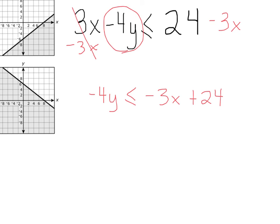And then I'm going to divide by negative 4 on everything. And so I have y. Now notice, this is where they'll get you on these problems. I divided by negative on both sides. So what happens to the inequality? I'm going to flip it. So I have y is greater than or equal to 3x over 4 minus 6.